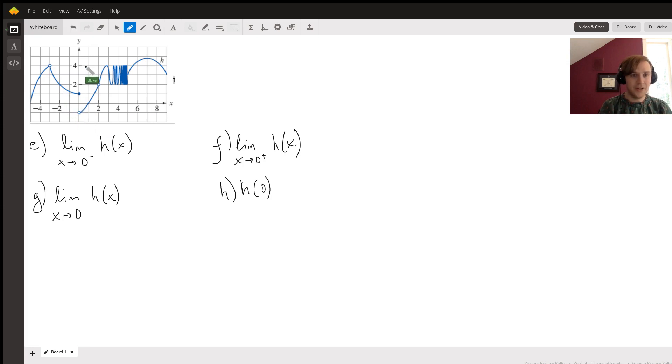So over here, this is where X equals zero on this Y axis. This is where X is equal to zero. And we're just trying to see, as we get closer and closer to this X equals zero line from the left, what is our function approaching? So as we do that, we can see that our function is getting closer and closer to one, positive one. So for E, our answer is positive one.